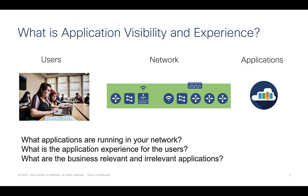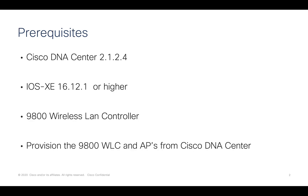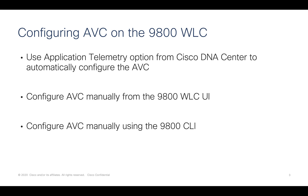Now let's take a look at how this can be done using the 9800 wireless LAN controller and Cisco DNA Center. The prerequisites are that the DNA Center should be running 2.1.2.4, the 9800 controller should be running IOS XE 16.12.1 or higher, and you also need to provision the 9800 controller and access points from Cisco DNA Center if you want to apply application telemetry from the Cisco DNA Center.